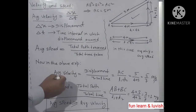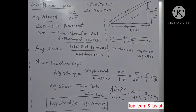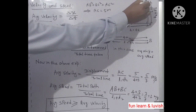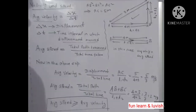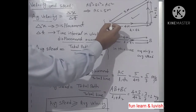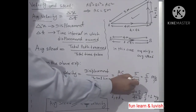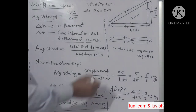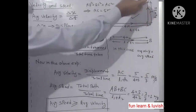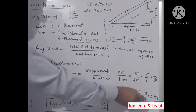Average velocity equals displacement upon total time. The displacement is AC — the final position with respect to initial position — so it is AC divided by total time (t1 + t2). Average speed is total path traversed upon total time: that is AB + BC divided by (t1 + t2), which equals 7 by 7, giving 1 meter per second.